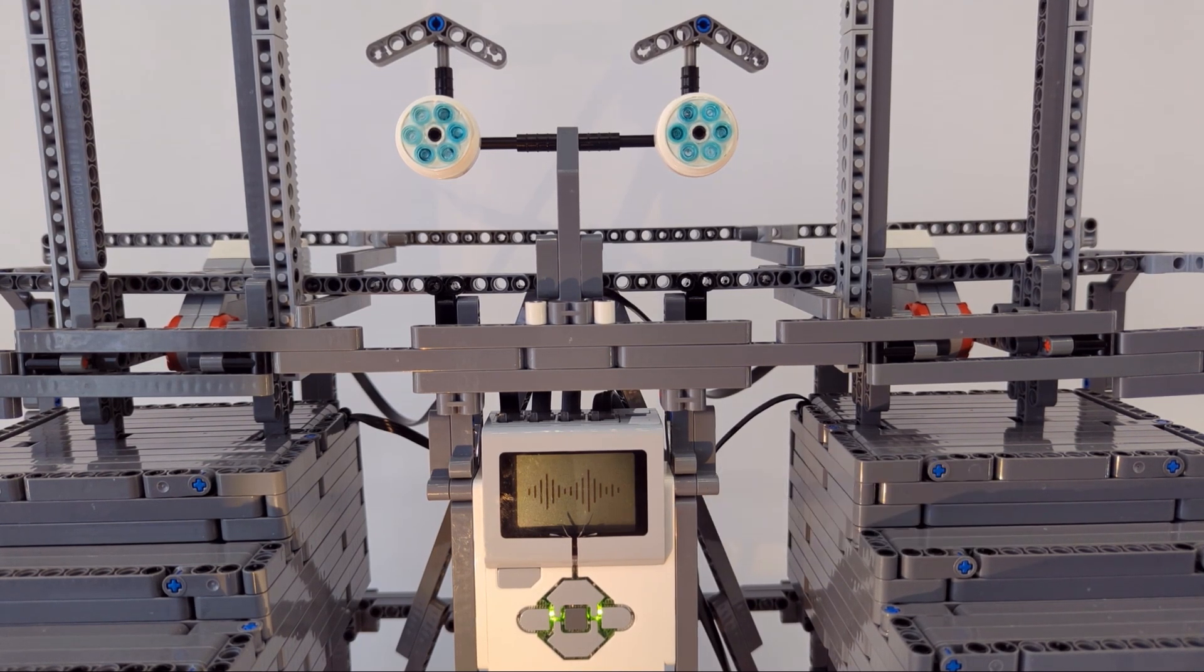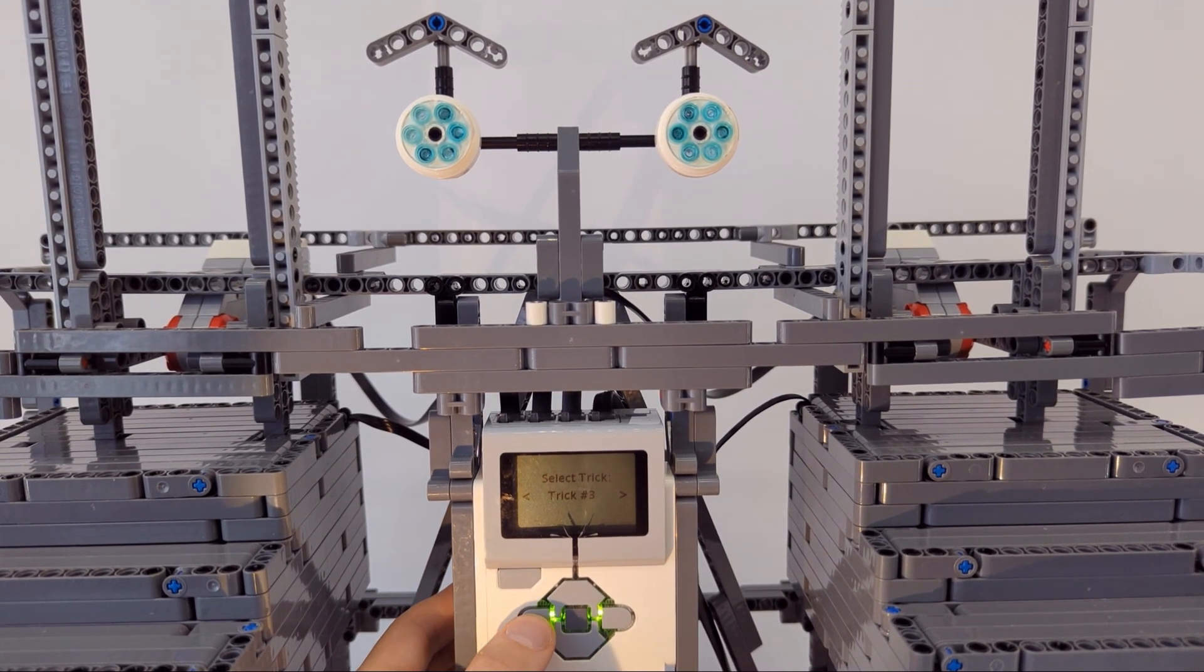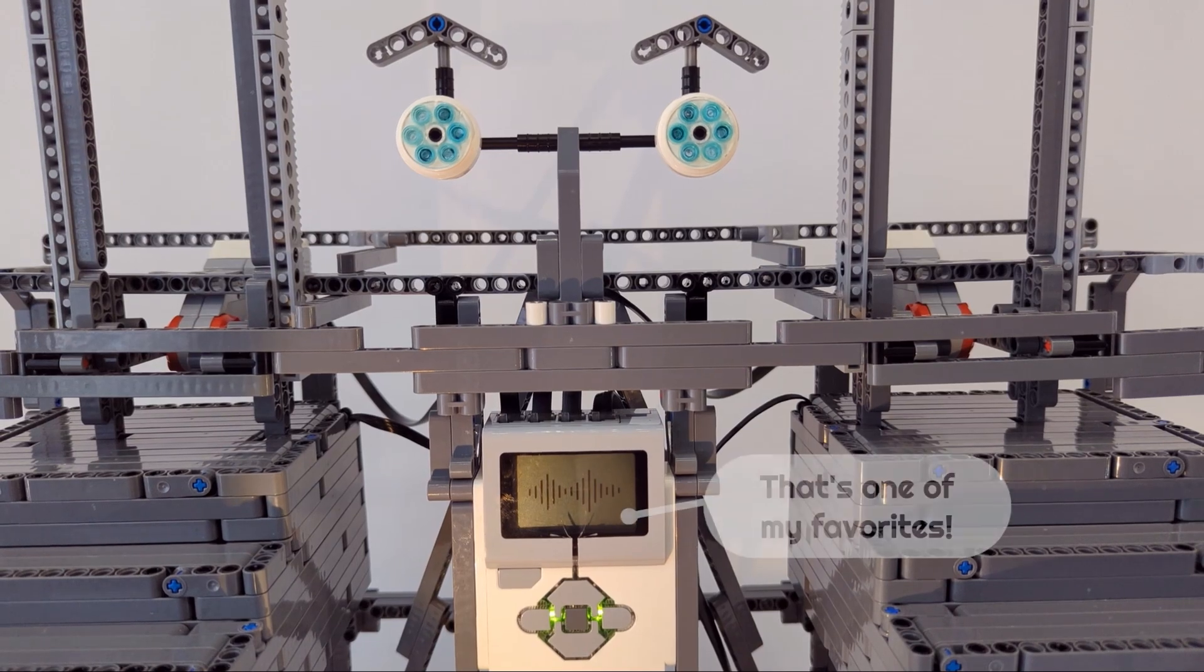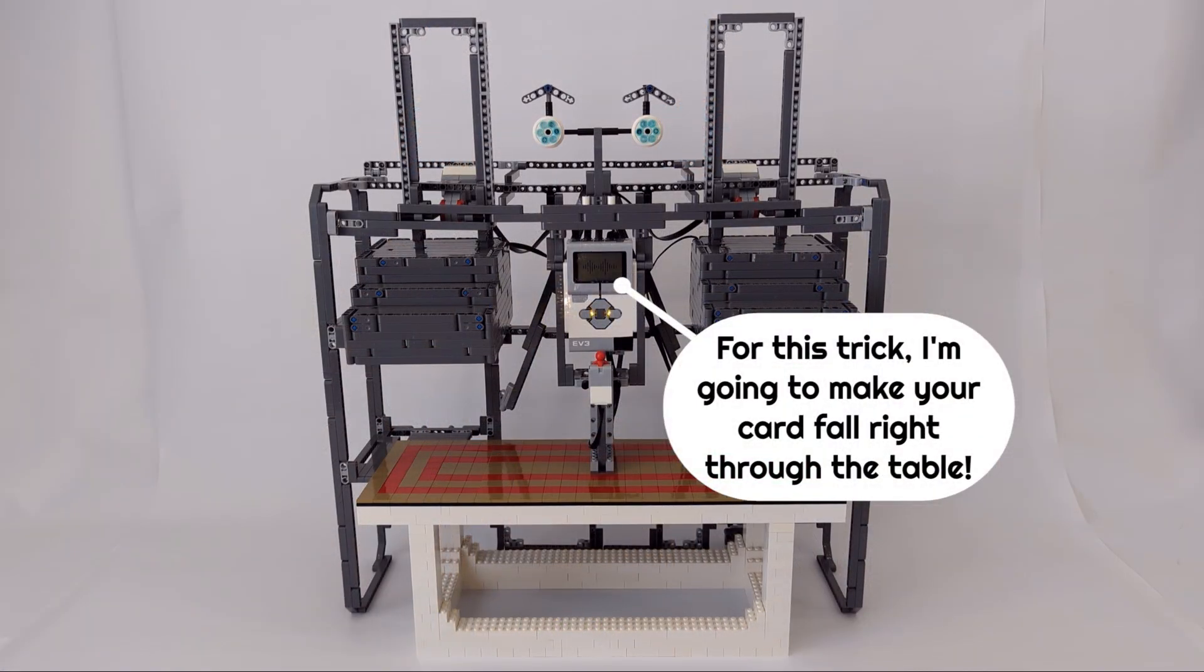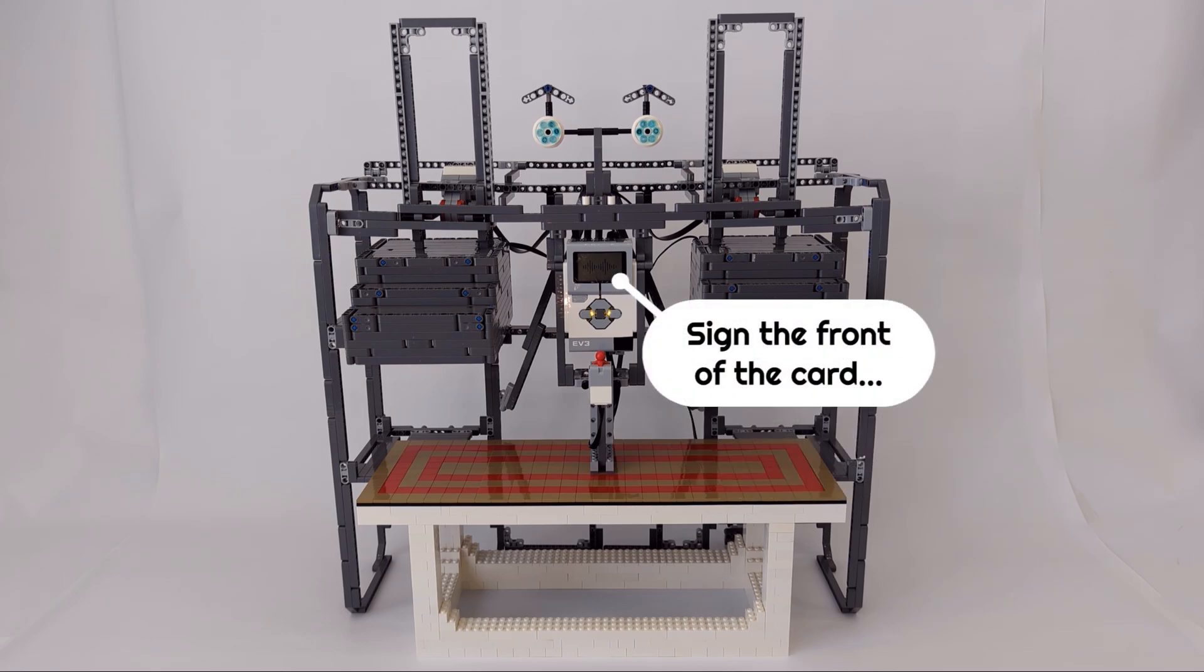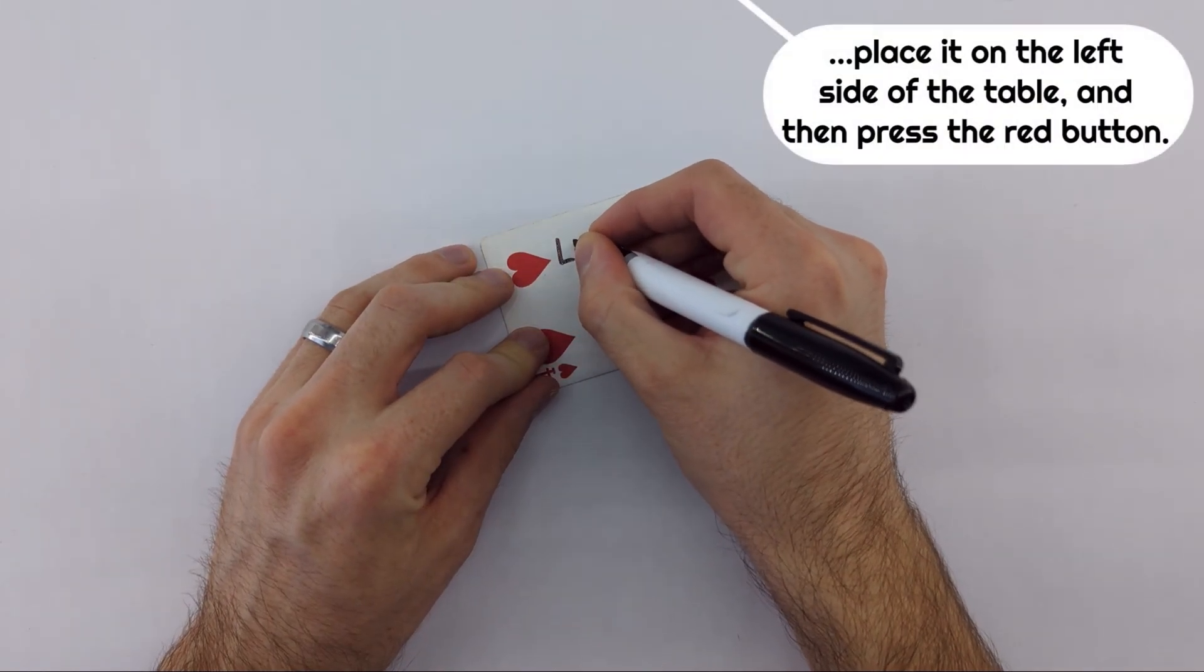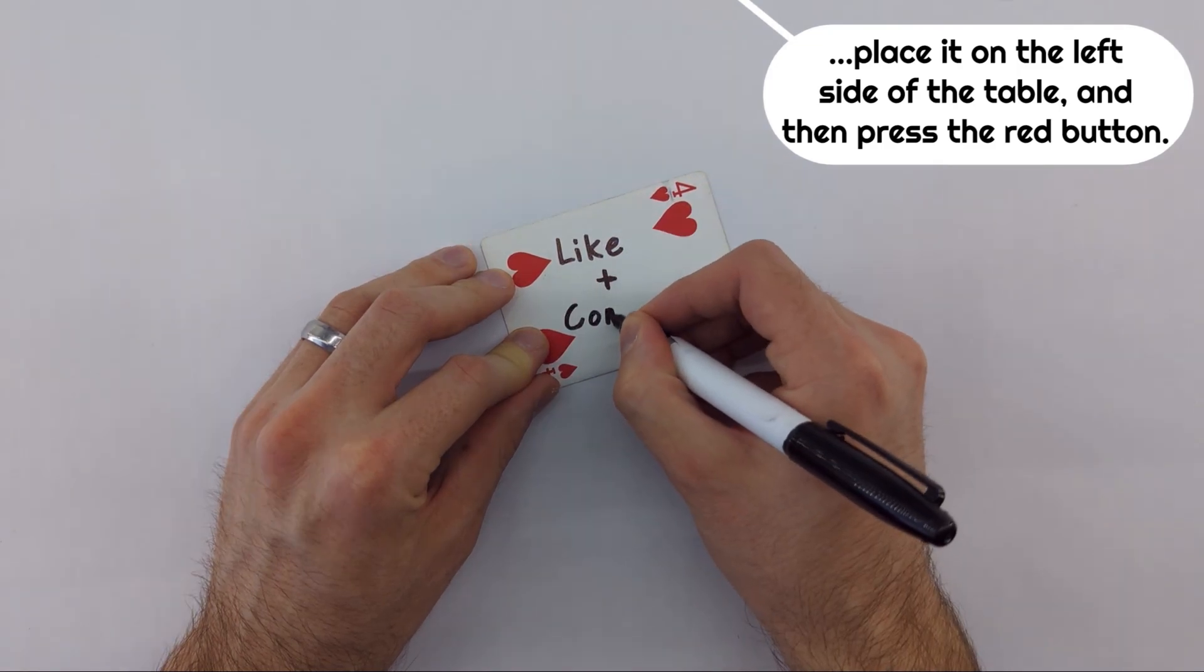Want to see another trick? That's one of my favorites. For this trick, I'm going to make your card fall right through the table. Sign the front of the card, place it on the left side of the table, and then press the red button.